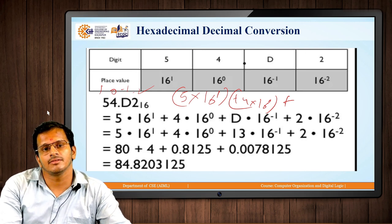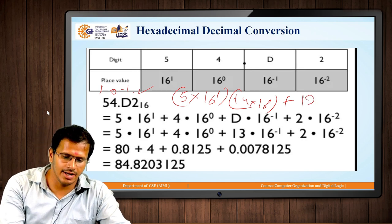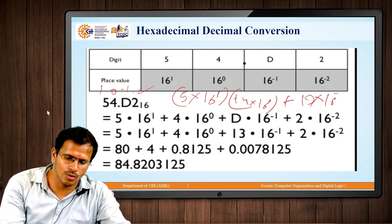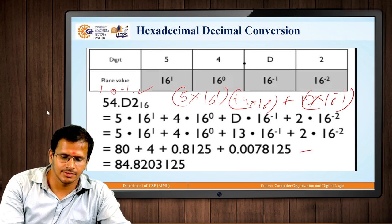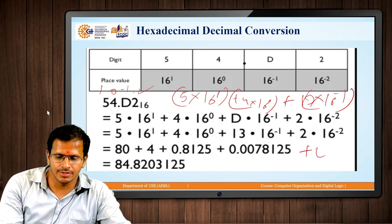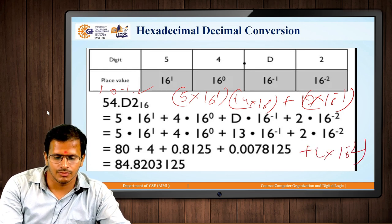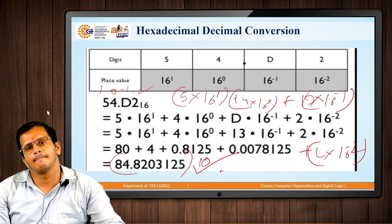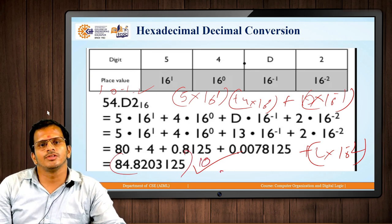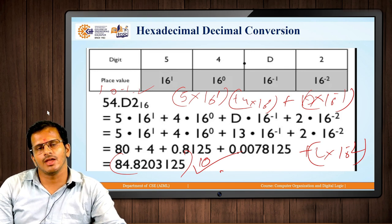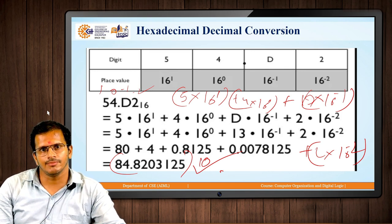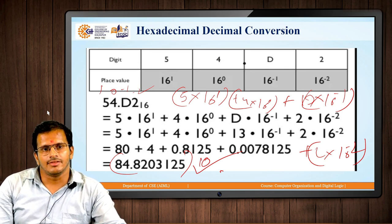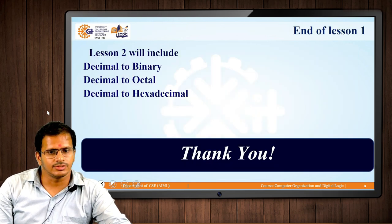A is 10, B is 11, C is 12, D is 13. So the fractional part is 13 × 16⁻¹ + 2 × 16⁻². This gives the final decimal result. This is how in the first part we understood the conversion from binary, octal, and hexadecimal to the decimal number system.